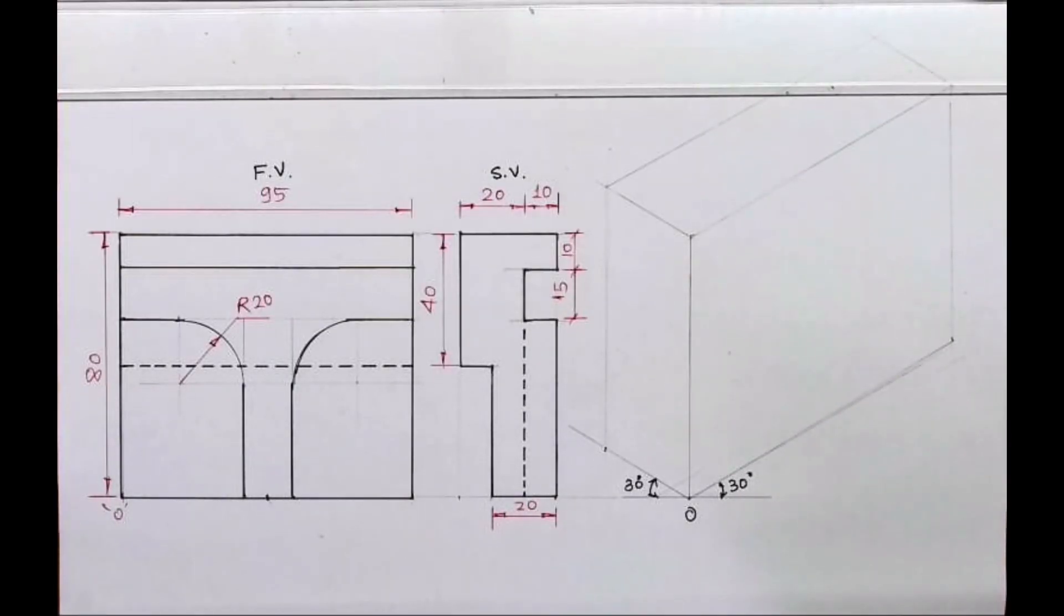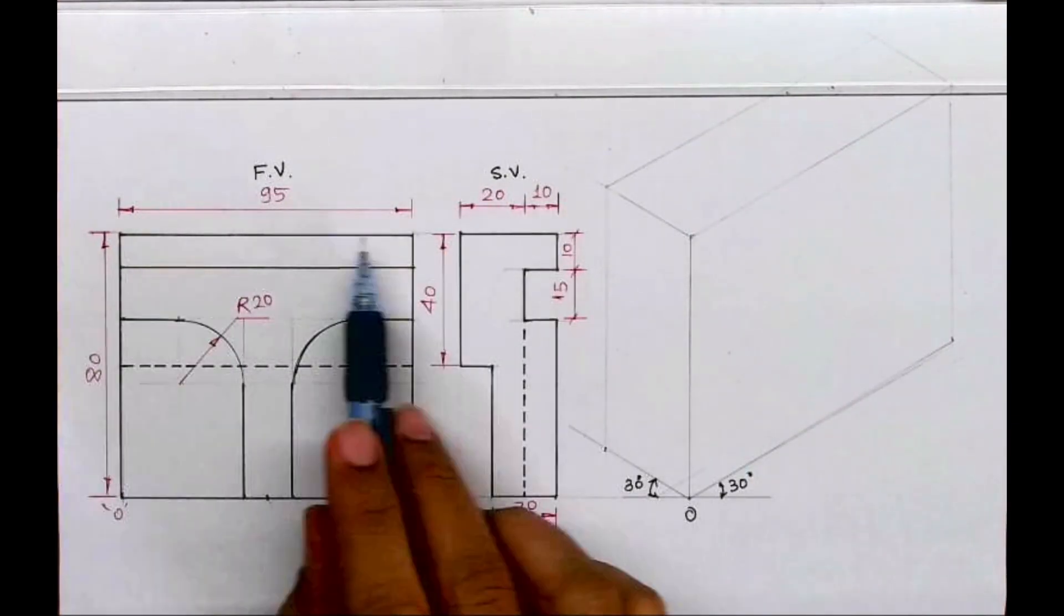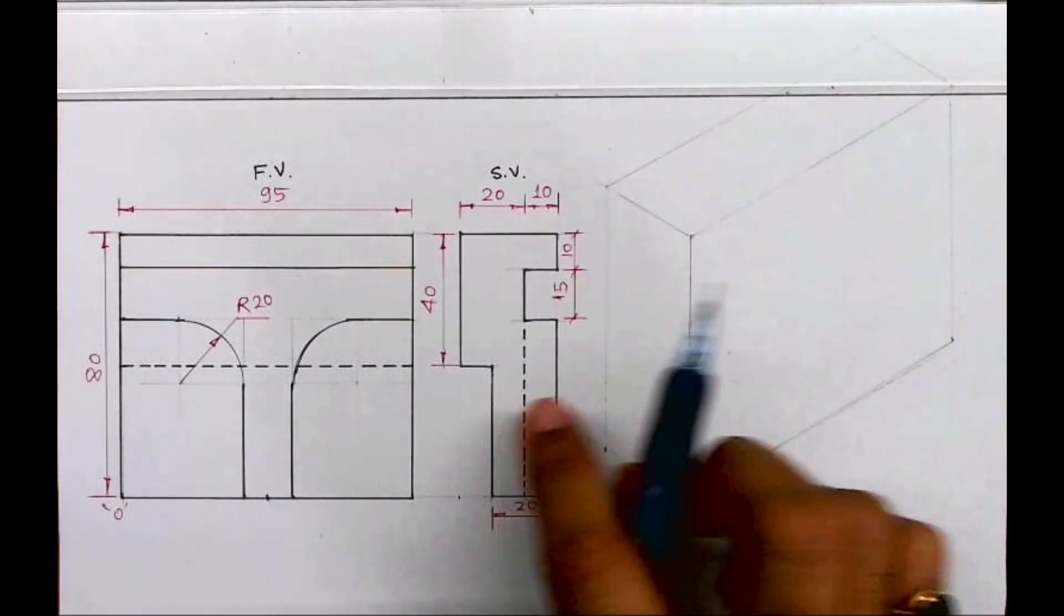Welcome to technical drawing. Today we'll see this sum in isometric, front view, and side view. Length is 95, height is 80, and width is 30. So we'll draw layout first.